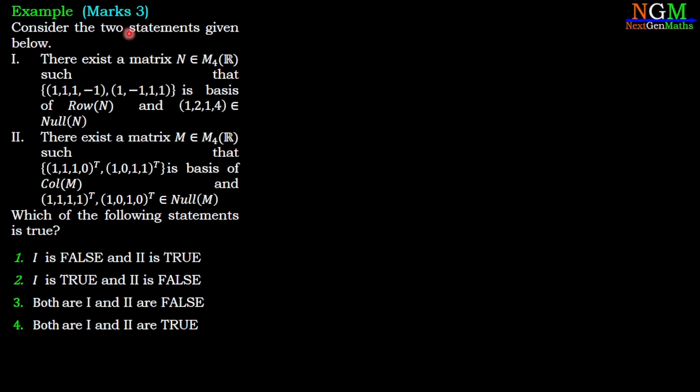Consider the two statements given below. First statement: There exists a matrix N belonging to M₄(R) such that {(1,1,1,-1), (1,-1,1,1)} is a basis for the row space of N and (1,2,1,4) belongs to the null space of N.